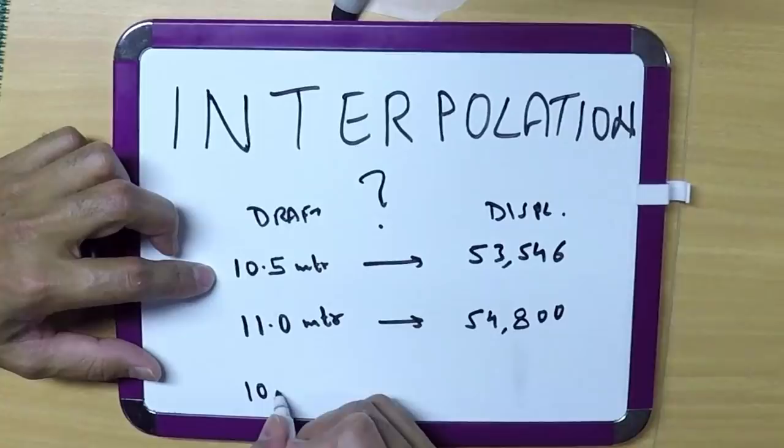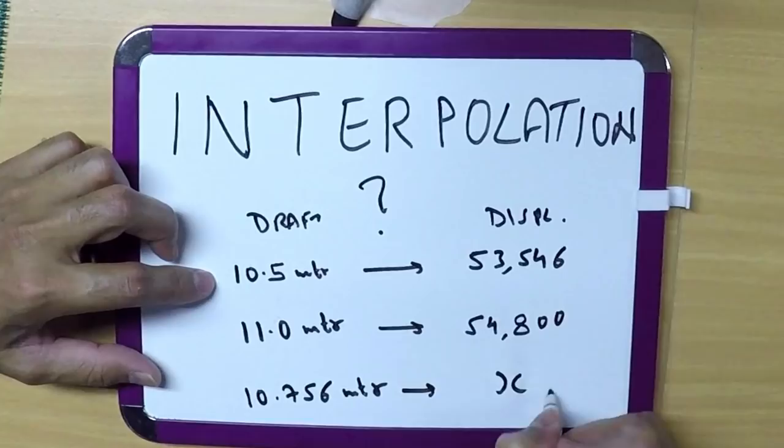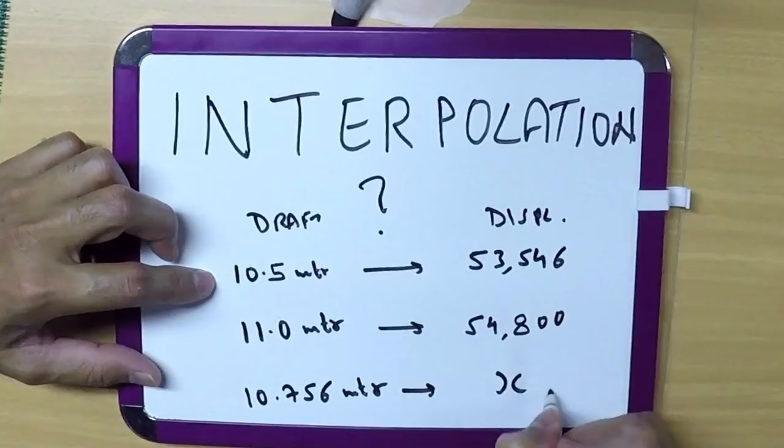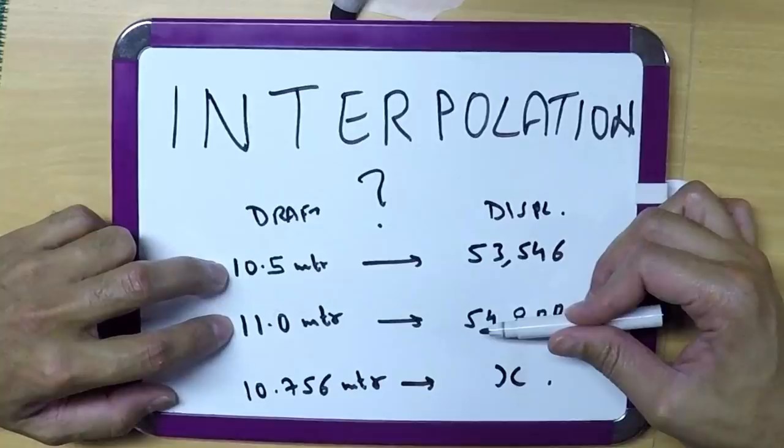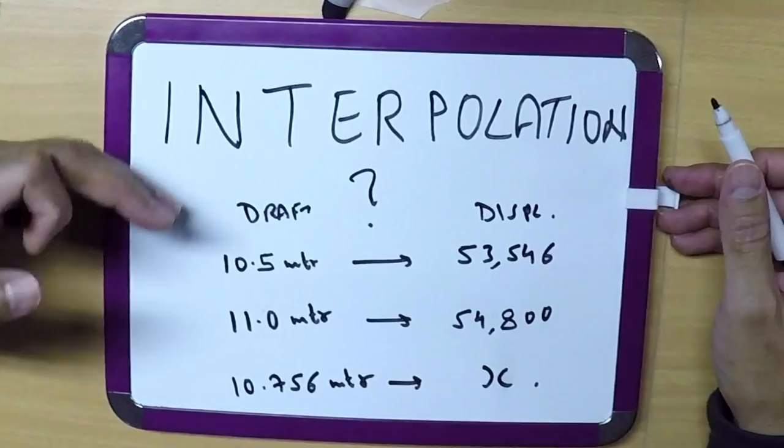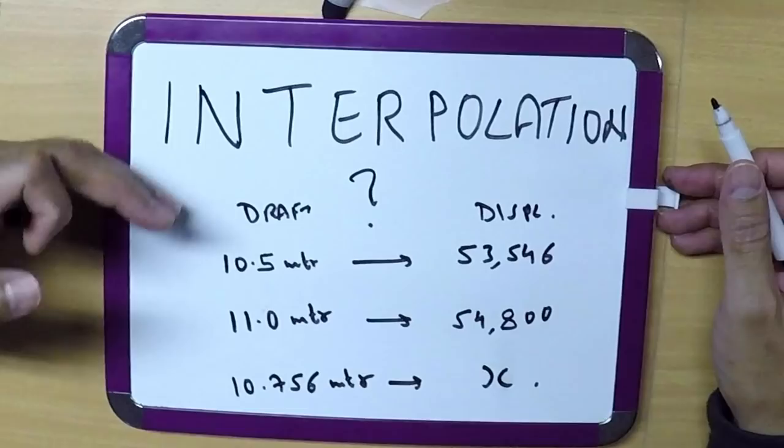To do this manually, it's going to take three to four minutes. You will have to find the difference between these two, and the difference is 50 centimeters here. So accordingly, how much for 10.756? This is going to waste at least a few minutes in your exams, and there are a lot of places you have to do interpolation. It will be difficult for you to finish your exam in time.